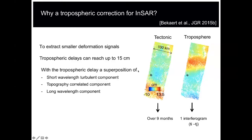When talking about the troposphere, we're talking about multiple components. There are long-wavelength components, a topography-correlated component — you can see here there's a mountain range, it goes lower, up, and back down — and there are volcanoes near Mexico City, giving that topography-correlated component. And then generally you have turbulence in the atmosphere, which is high-frequency noise.